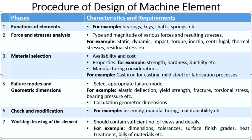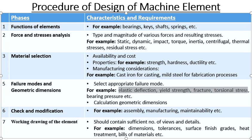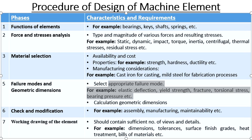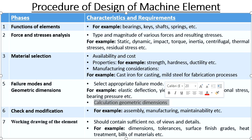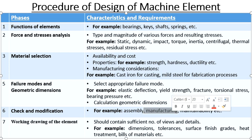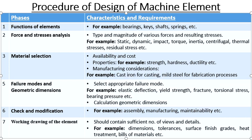The next point is failure modes and geometric dimensions. We have to select appropriate failure modes, which might include elastic deflection, yield strength, fracture criteria, torsional stress, or bearing pressure. This is connected with force analysis — if we clearly find out the acting forces, we will be able to identify the failure modes. Considering the forces and failure modes, we go for geometric dimensions calculations by applying theories, equations, and formulas to find out the dimensions. The next step is check and modification — whatever dimensions we have found, we check them for assembly, manufacturing conditions, and maintainability, and send modifications back to the previous stage to find optimum dimensions.